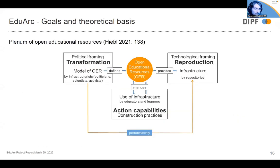OER are structured by a political framing — what I call the model of OER — the normative idea behind OER definitions and licensing models. OER are also structured by a technical framing via digital infrastructure. In recent years, OER repositories, also called ROER, have become a crucial hotspot to provide open learning and teaching objects, make them findable and accessible. OER and the use of infrastructure enable specific construction practices for open learning and teaching objects.